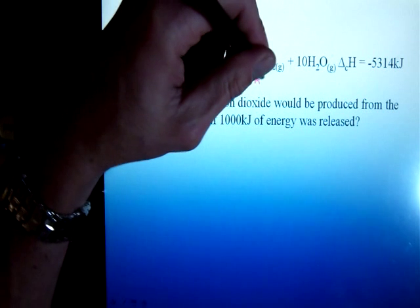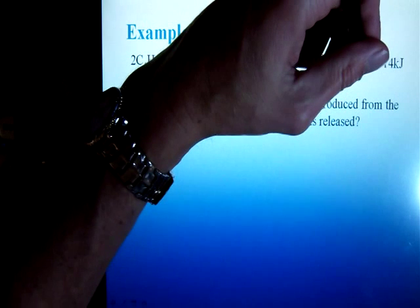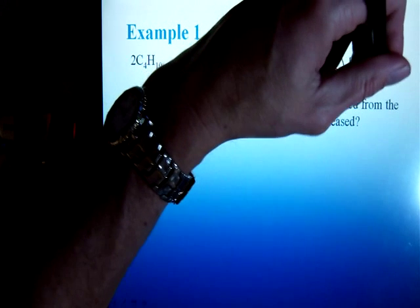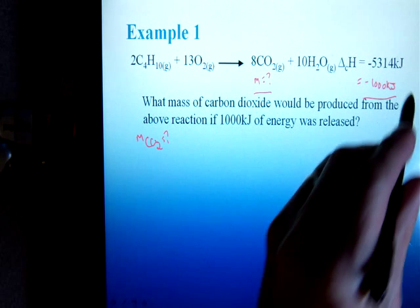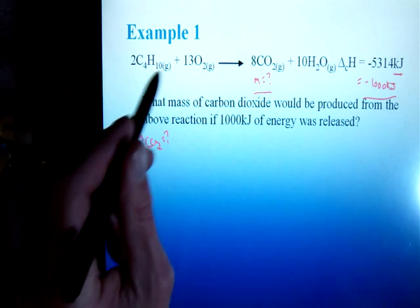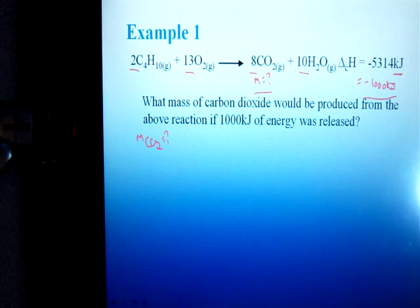I was told how much carbon dioxide is going to be produced when a thousand kilojoules are released. This is an experimental mass corresponding to an experimental entropy change. The 5,314 kilojoules is the theoretical energy change, entropy change for this balanced reaction. So this number goes with these coefficients only. You may recall that from Hess as well.